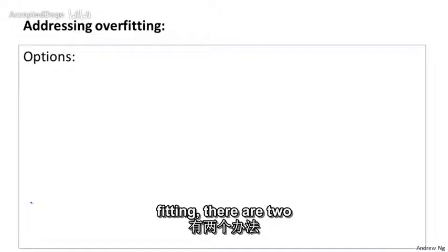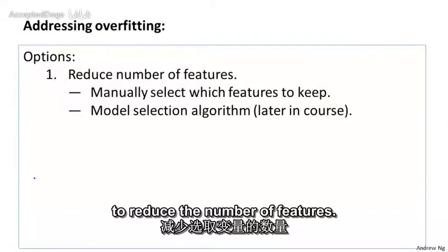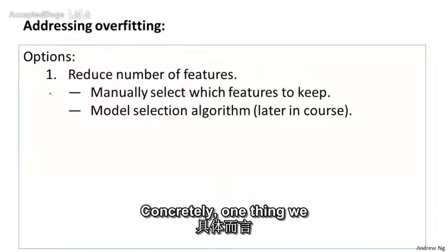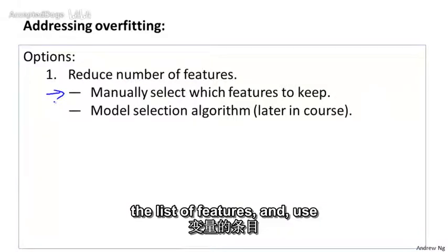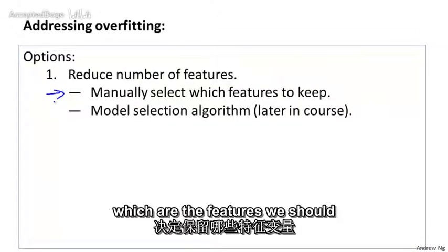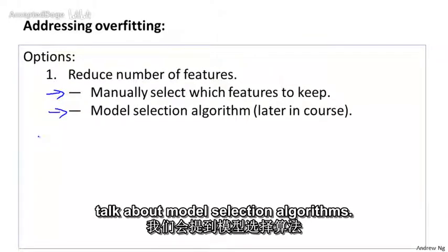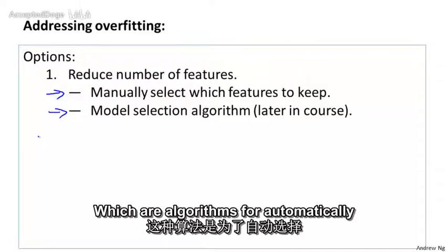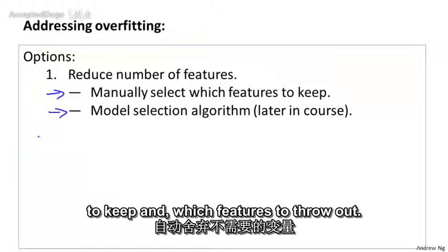In order to address overfitting, there are two main options for things that we can do. The first option is to try to reduce the number of features. Concretely, one thing we could do is manually look through the list of features and use that to try to decide which are the more important features and therefore which are the features we should keep and which are the features we should throw out. Later in this class, we'll also talk about model selection algorithms, which are algorithms for automatically deciding which features to keep and which features to throw out.